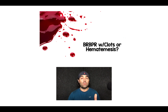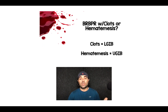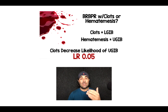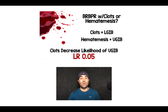Bright red blood per rectum with clots versus hematemesis — this is pretty straightforward. If you're seeing clots, assume lower GI bleed. If you're seeing hematemesis, then this is most likely an upper GI bleed. That's probably one of the most straightforward things to look at. Clots in the stool decrease the likelihood of upper GI bleed with a likelihood ratio of 0.05, which is a pretty strong negative likelihood ratio.